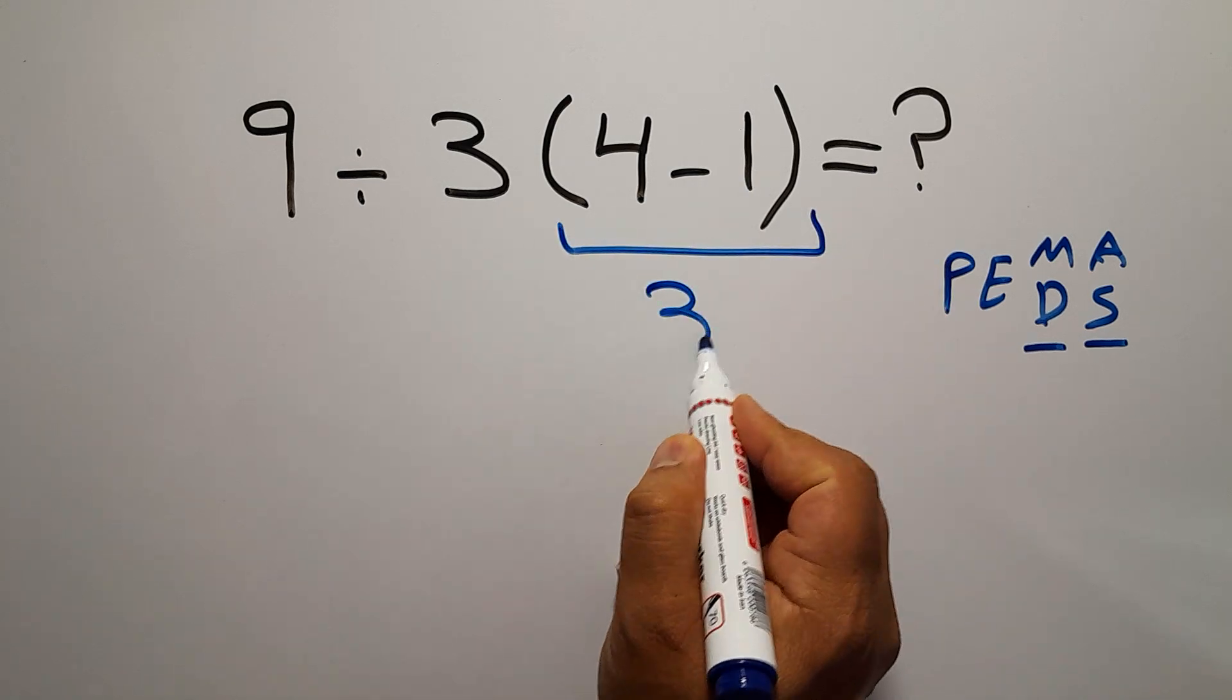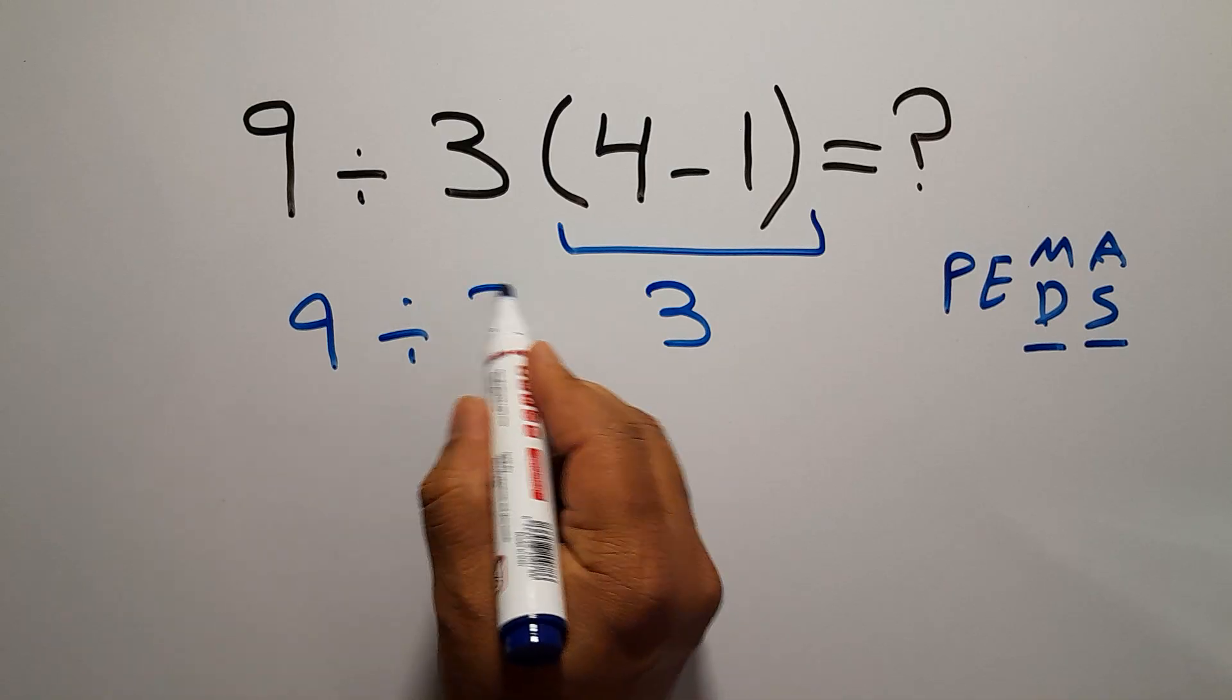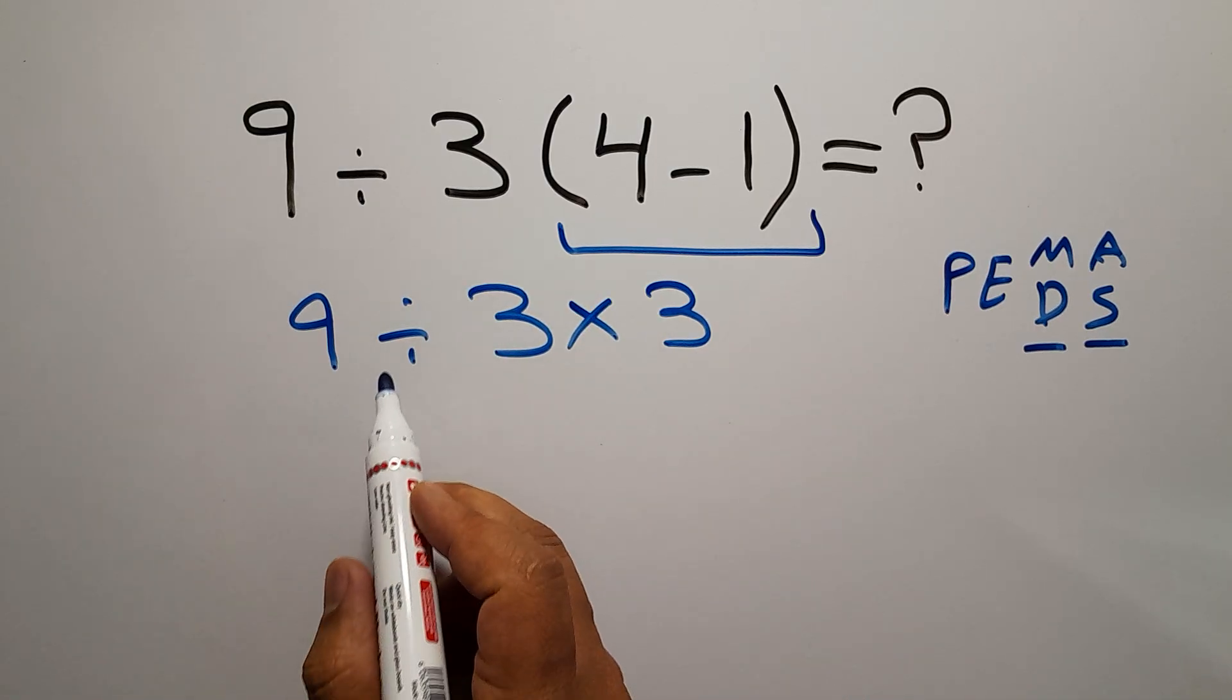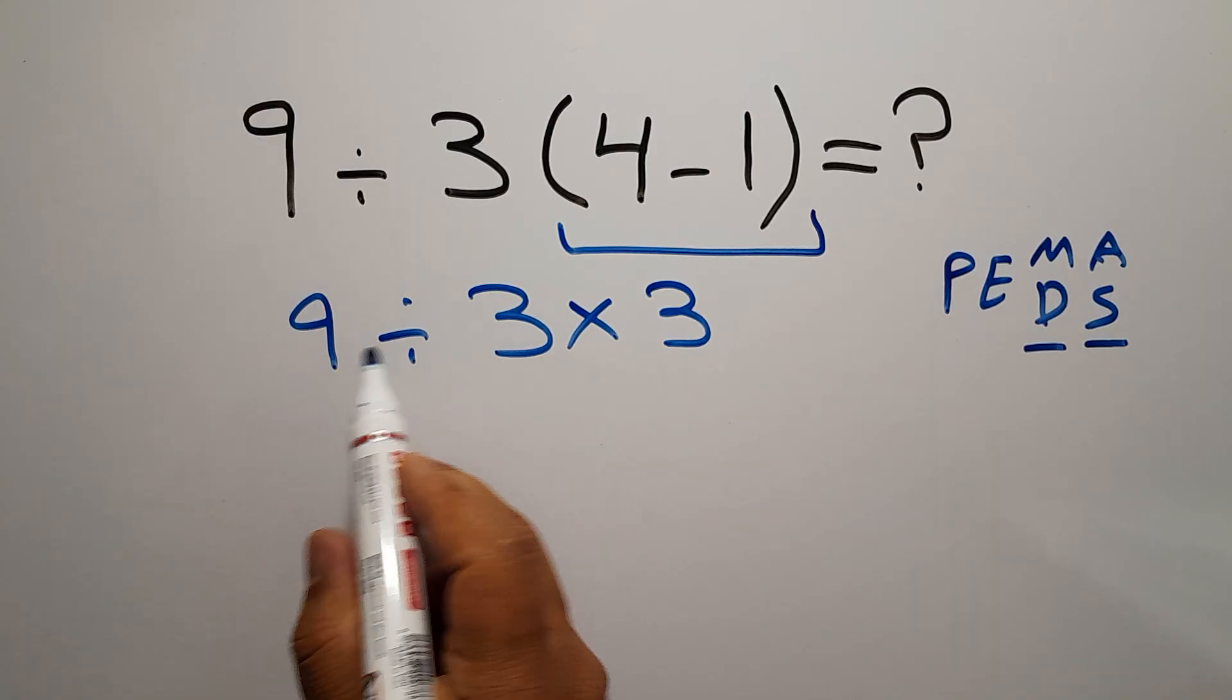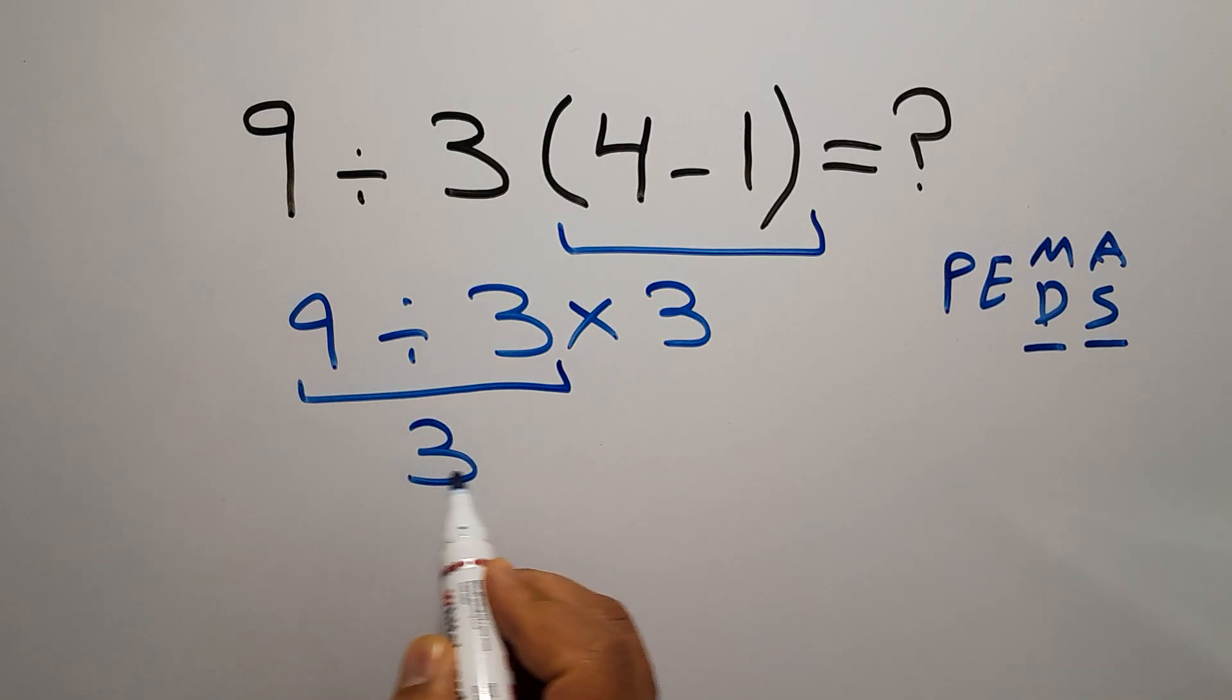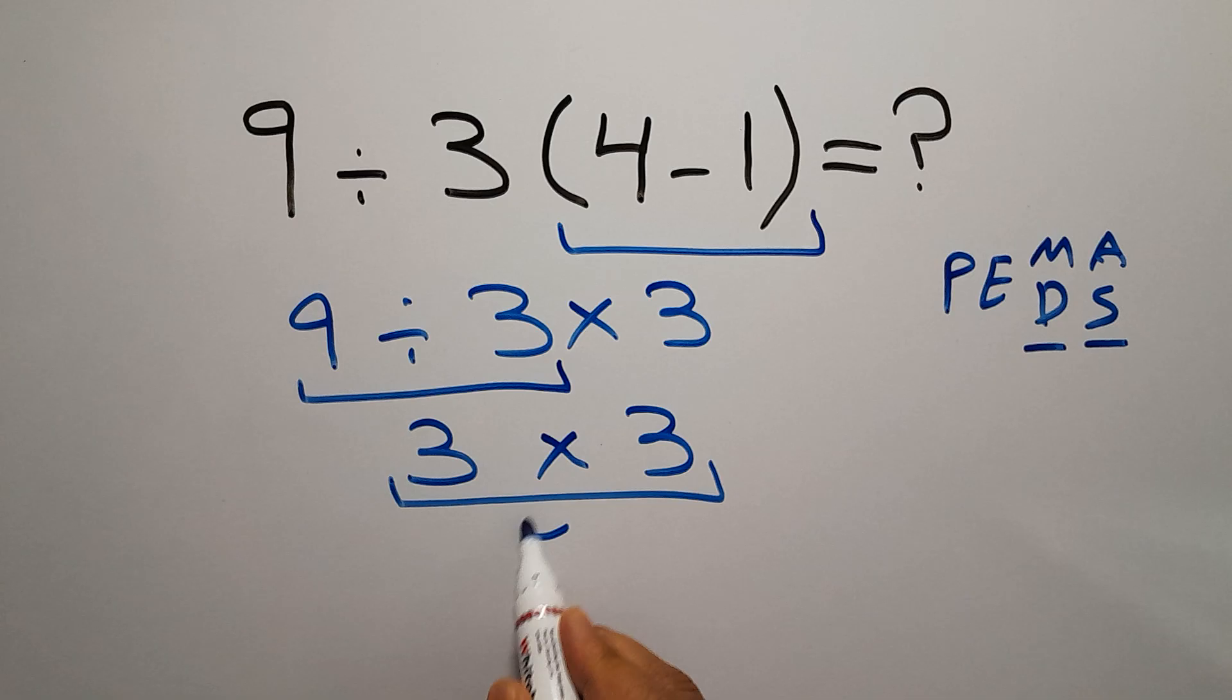...equals 3. Okay, so we have 9 divided by 3, then times 3. Now we do this division, not this multiplication. 9 divided by 3 gives us 3, and 3 times 3 equals 9.